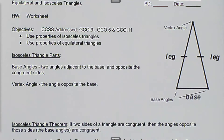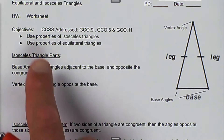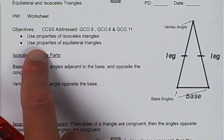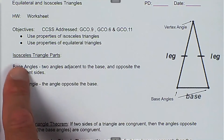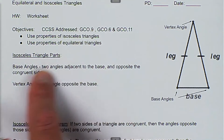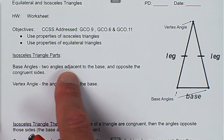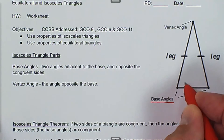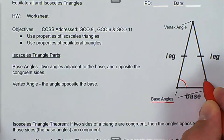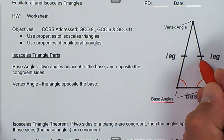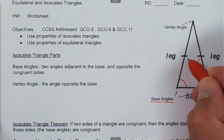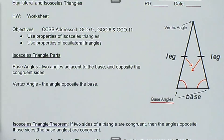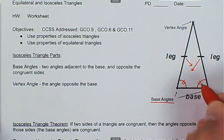We are talking about equilateral and isosceles triangles and we want to use properties of isosceles triangles and equilateral triangles. The isosceles triangle parts: we have the base angles, and those are the two angles adjacent to the base and opposite the congruent sides. Right there are the base angles — they're adjacent to the base and opposite the congruent sides, and we will show that these are congruent as well.